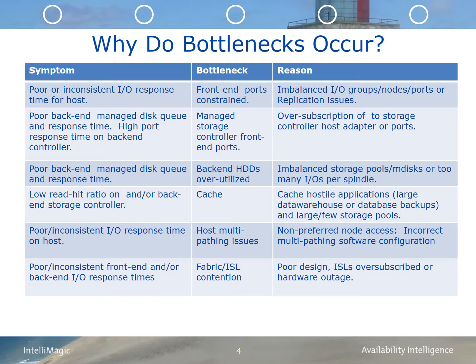Another bottleneck is host multipathing issues. These may manifest as I/O response times on the host being higher than expected or inconsistent. This can result from incorrect multipathing software configuration, or, for example, in an IBM stretch cluster when the primary access for a volume is on the remote SVC node. And lastly, fabric and ISL contention can be a result of poor design, ISLs, or oversubscribed hardware. This will result in poor or inconsistent front-end and/or back-end response time on the SVC.